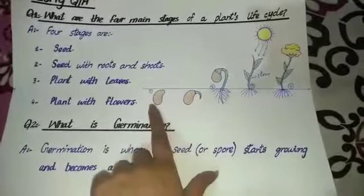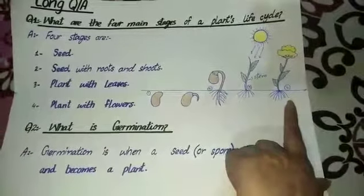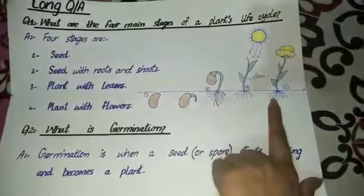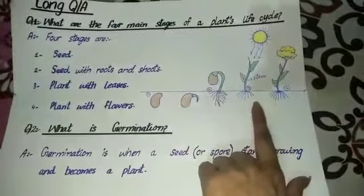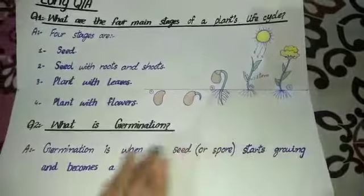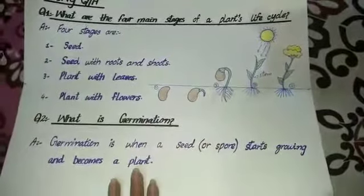آسان لفظوں میں: seed کو plant کرنے سے لے کے fully grown plant بننے تک جو بھی پورا process ہے اس process کو germination بولتے ہیں۔